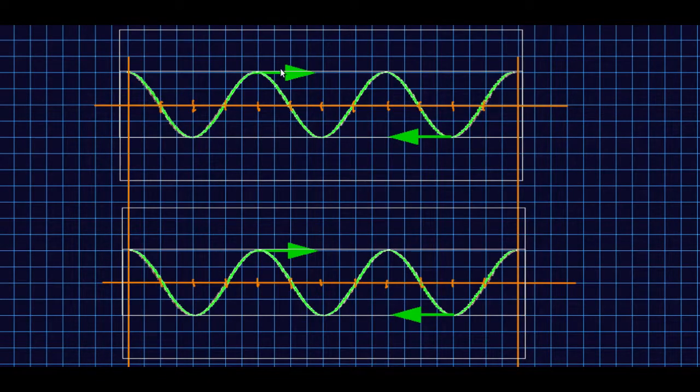At the end of last lecture we saw that when two sinusoidal waves that are identical except that they're going in opposite directions meet, we get a particular distinctive pattern and we call that pattern a standing wave.